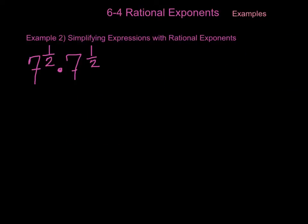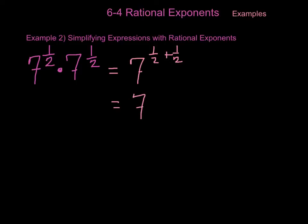Now we're going to simplify some expressions with rational exponents. In this example, we have 7 to the 1 half power times 7 to the 1 half power. There are actually two methods we could use to simplify this. The first method is by using the law of exponents — when you multiply like bases, you add the exponents together. So we would end up with 7 to the 1 half plus 1 half. Well, 1 half plus 1 half is 1, so we end up with 7 to the first power, which simplifies to give us 7.